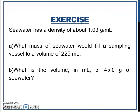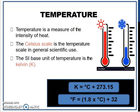We can do the same exercise. Alright. Next, we proceed to temperature. Temperature is a measure of the intensity of heat. The Celsius scale is the temperature scale in general scientific use. But the SI base unit of temperature is Kelvin. So this is the unit conversion. If you want to convert Kelvin to degree Celsius, you use this formula. Kelvin equals degree Celsius plus 273.15.